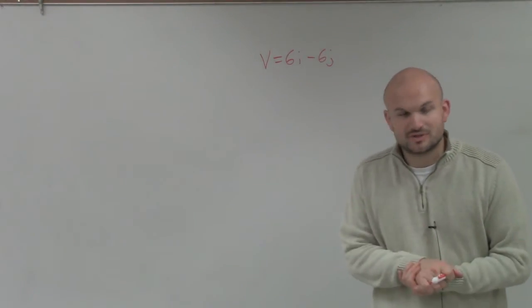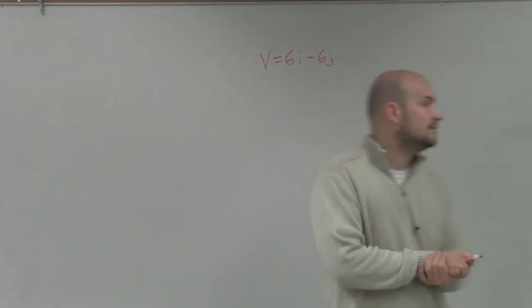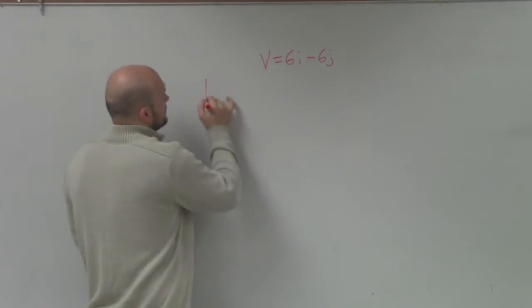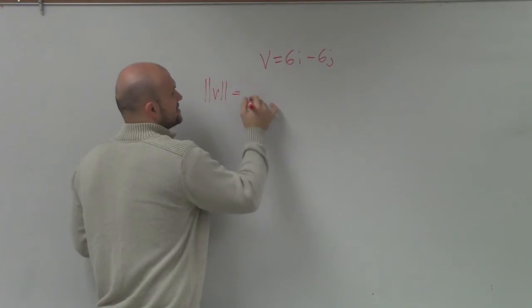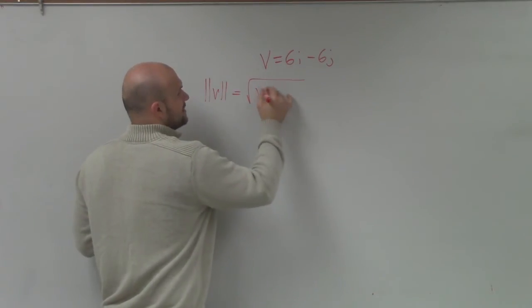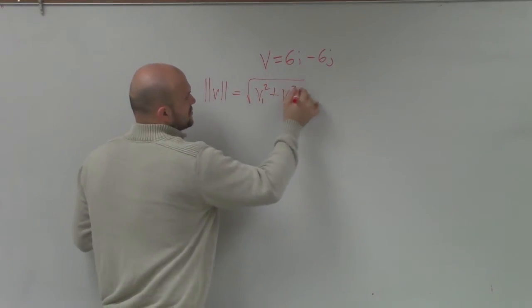We need to find the magnitude, which is probably the most basic part of this. To do that, remember the magnitude of your vector v is just going to be the square root of v1 squared plus v2 squared.